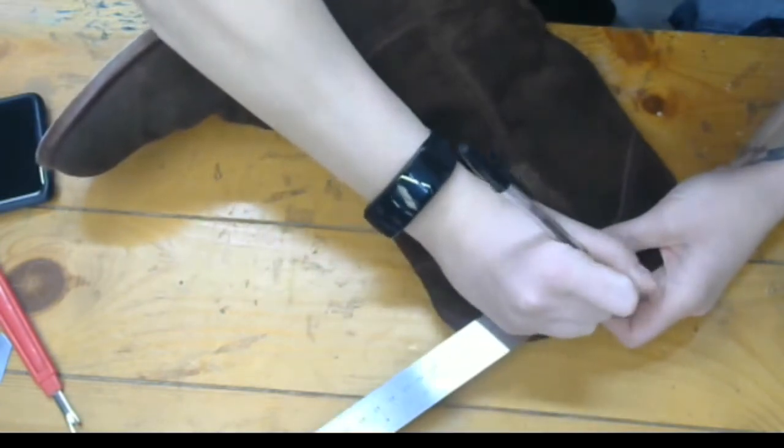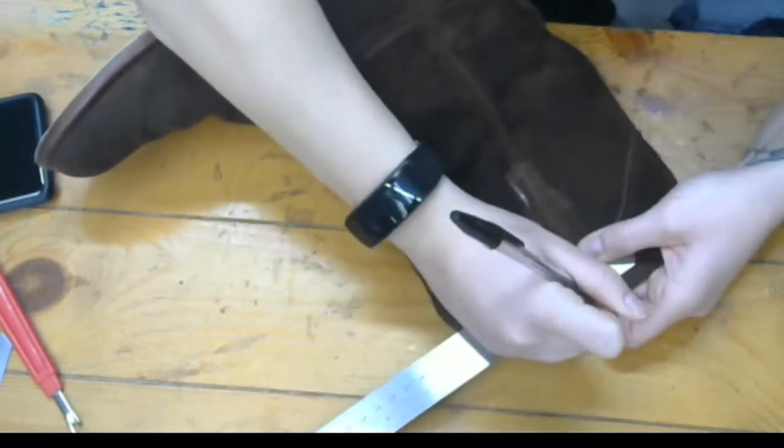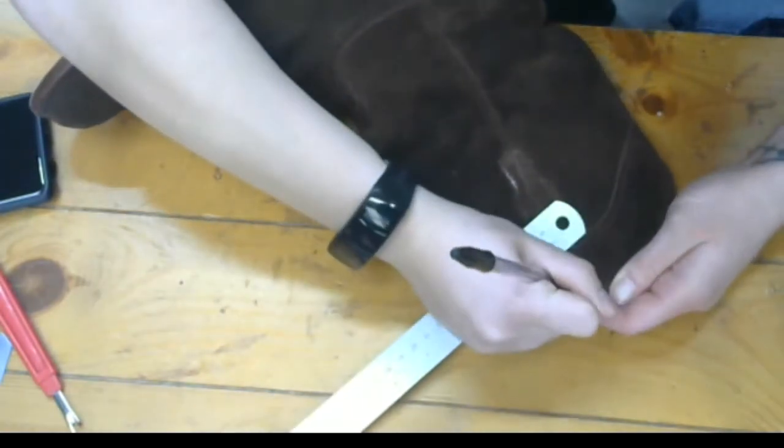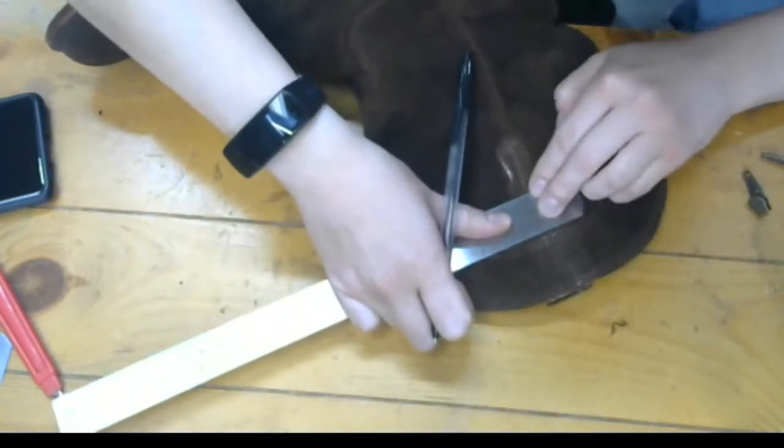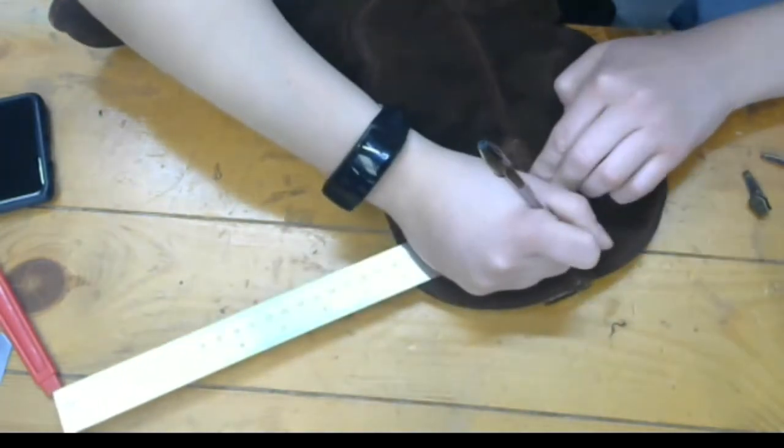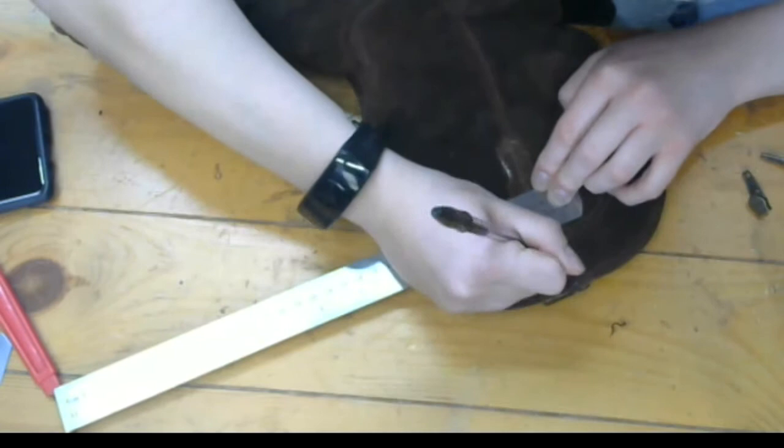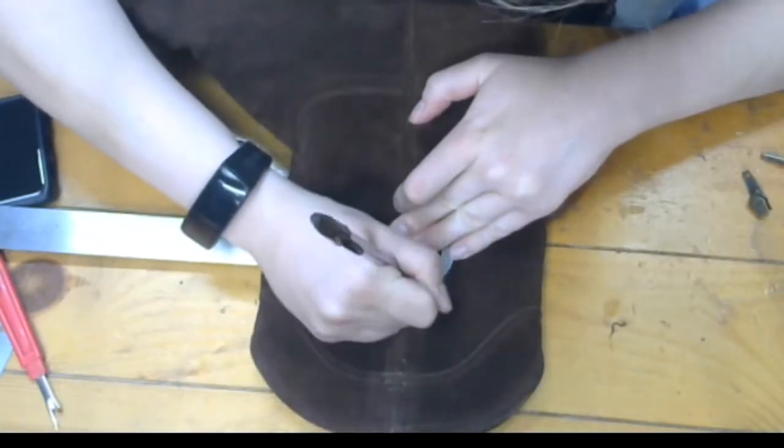The first thing I did was take all of the pull tabs out from the side on the boots on each boot, then marked about half an inch near the tubing that was going down.